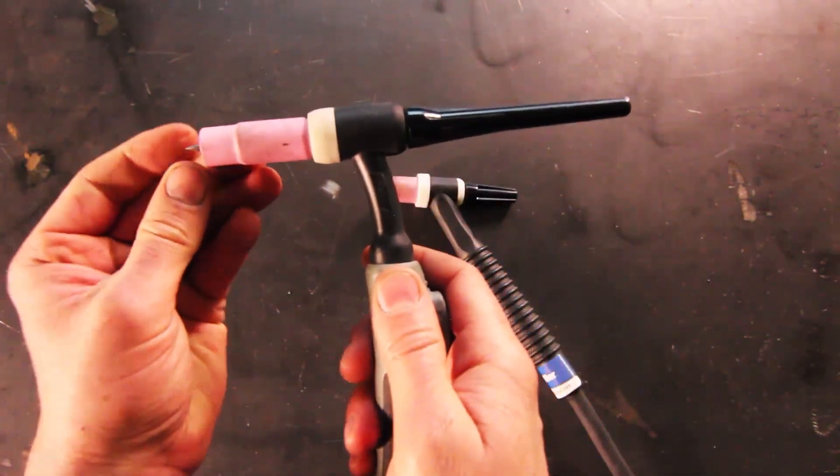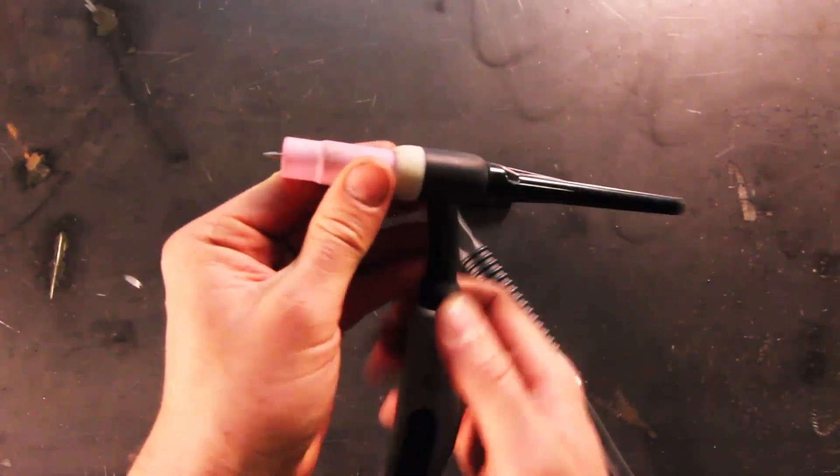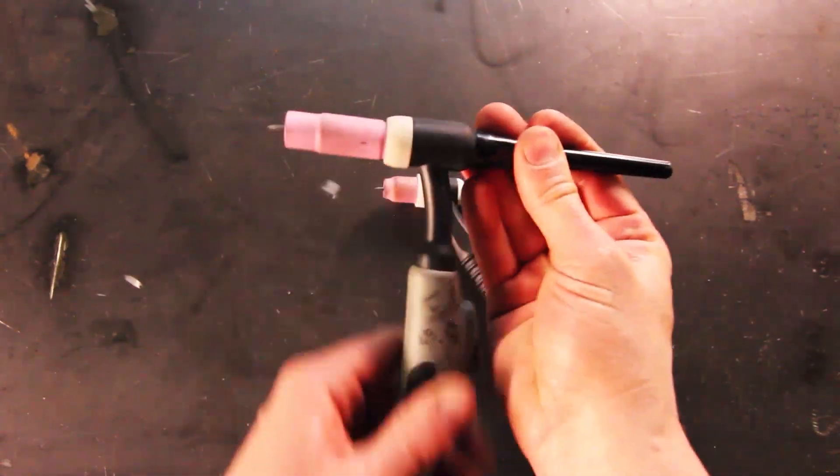To adjust your tungsten stick out, all you have to do is loosen the back cap a little bit, adjust the stick out accordingly, tighten it back down, and you're good to go.